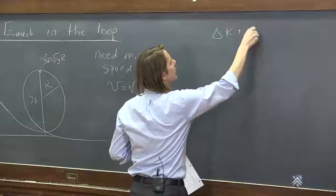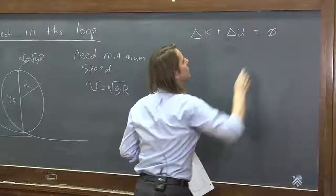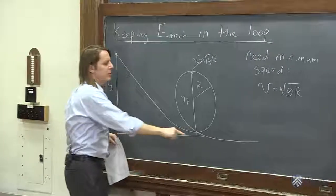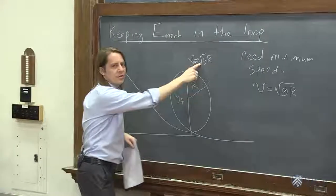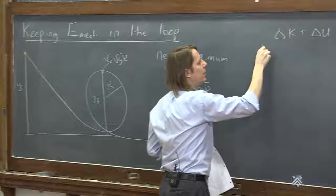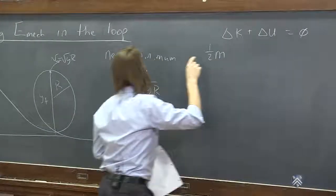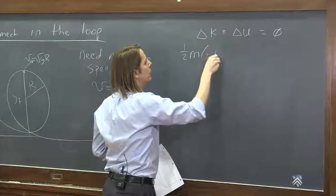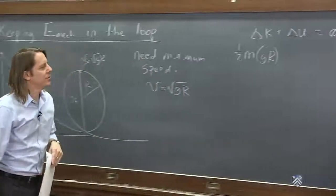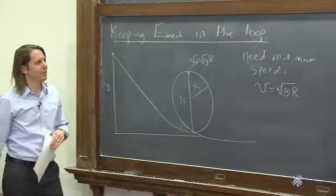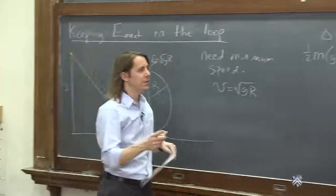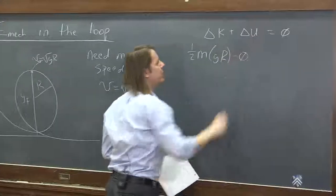Delta k plus delta u equals 0. Let's see. The final kinetic energy has to be 1 half m v squared, right? 1 half m and the square root of g r squared is just g r. So I'll write, gravitational constant times r. Acceleration due to gravity times r. And minus the initial kinetic energy is 0. So I'm going to release it from rest.